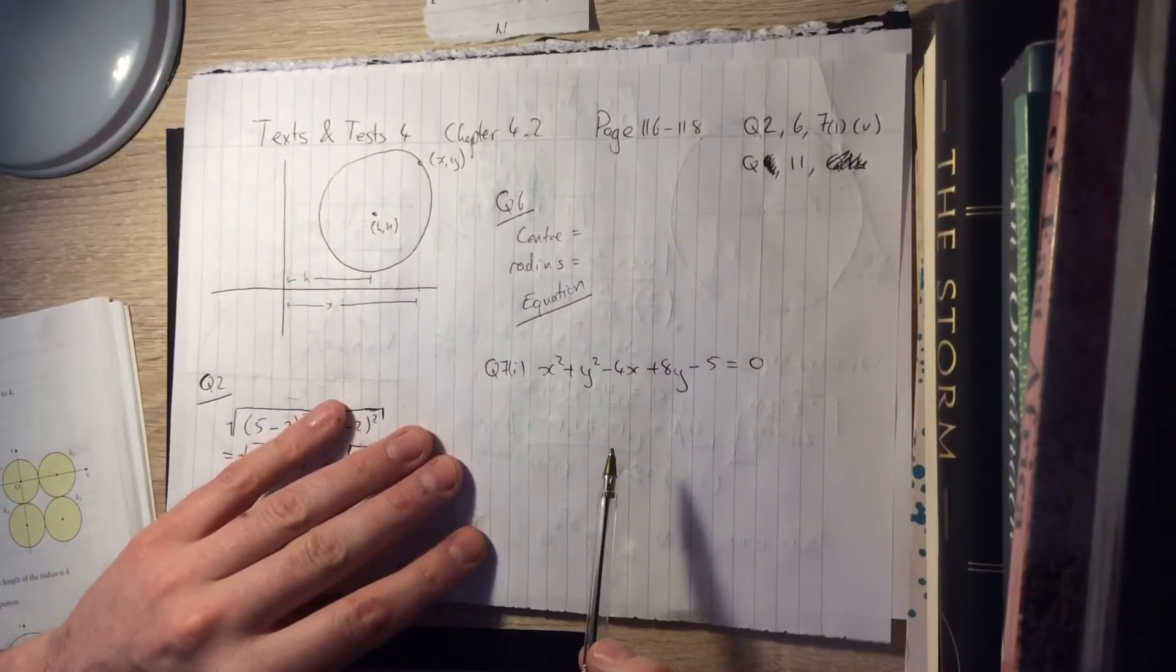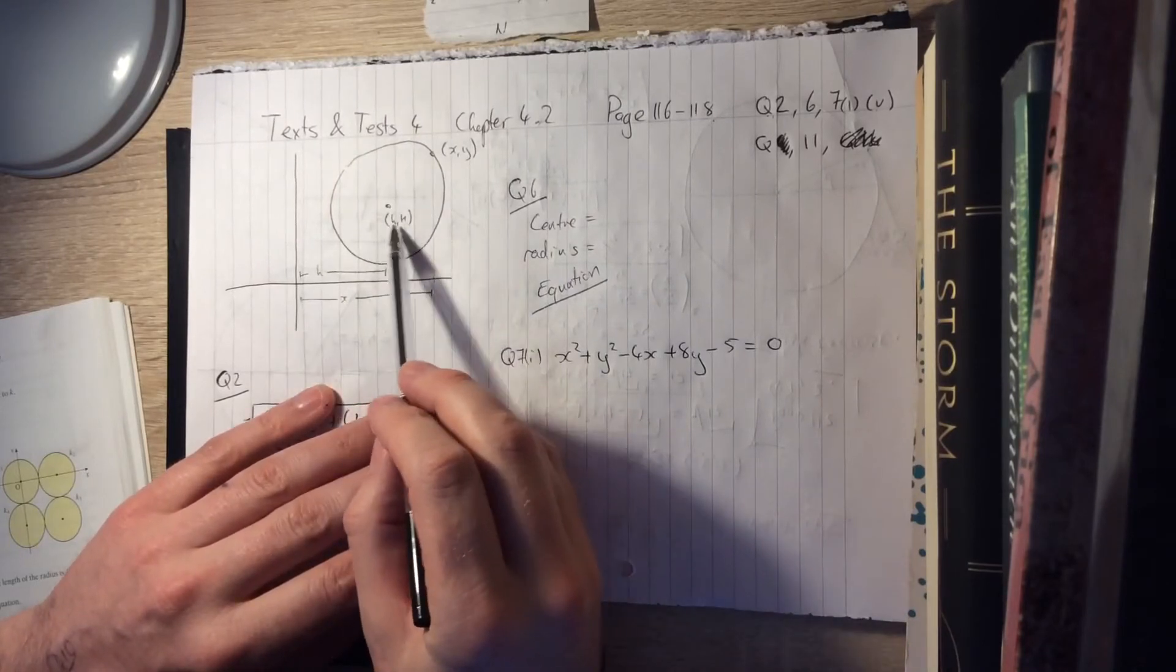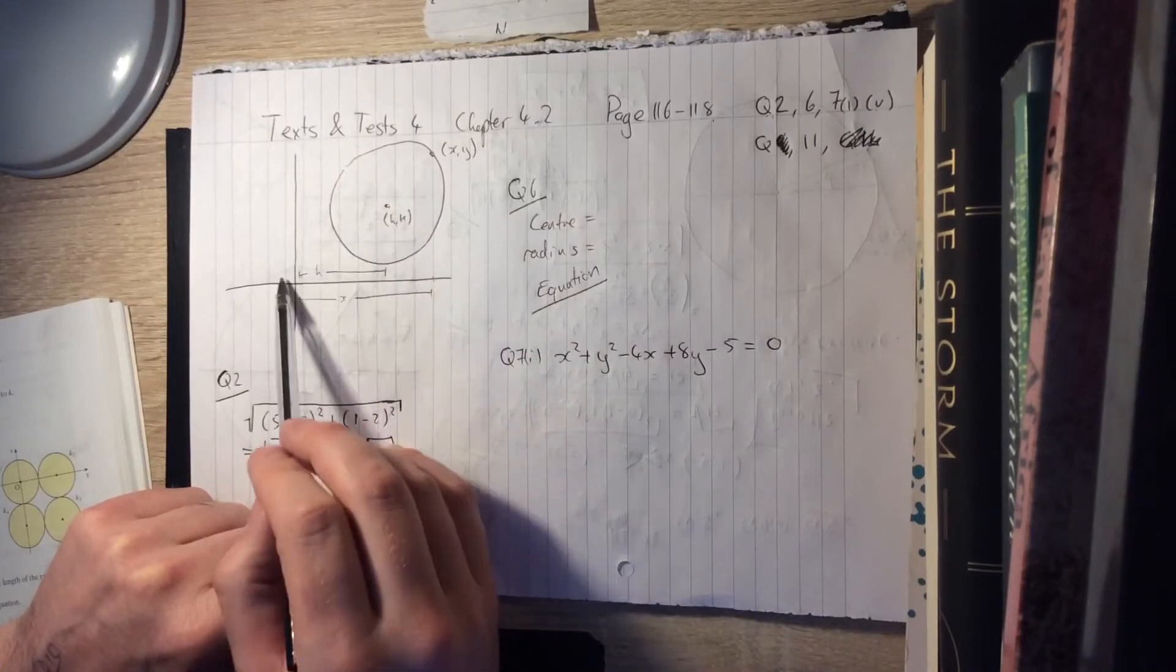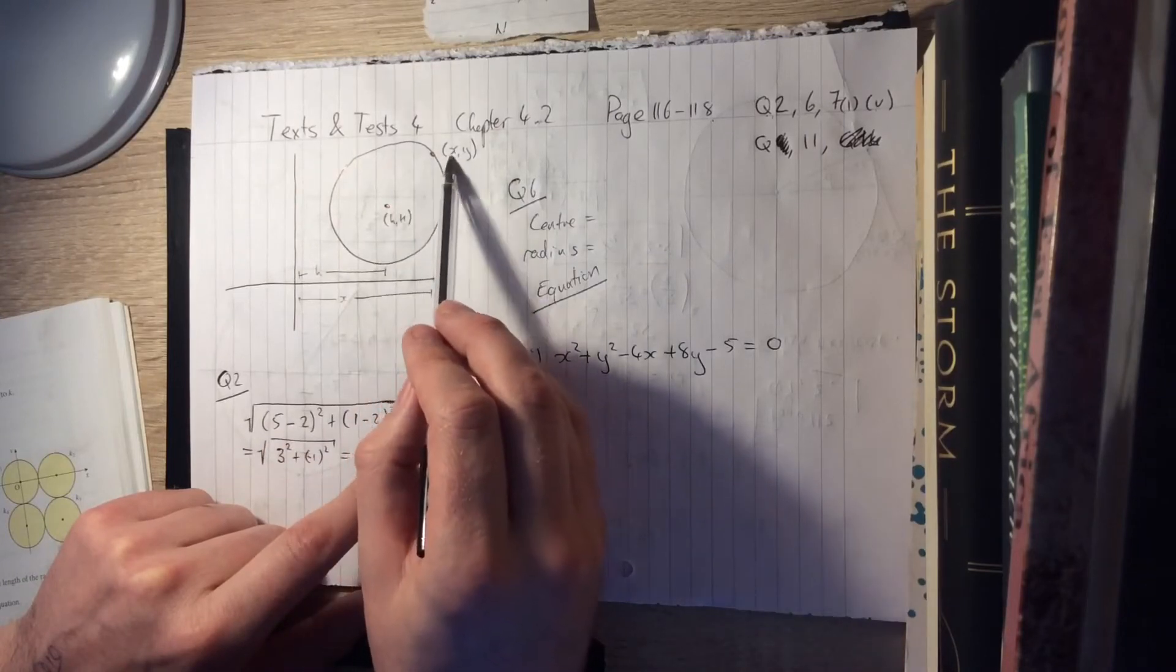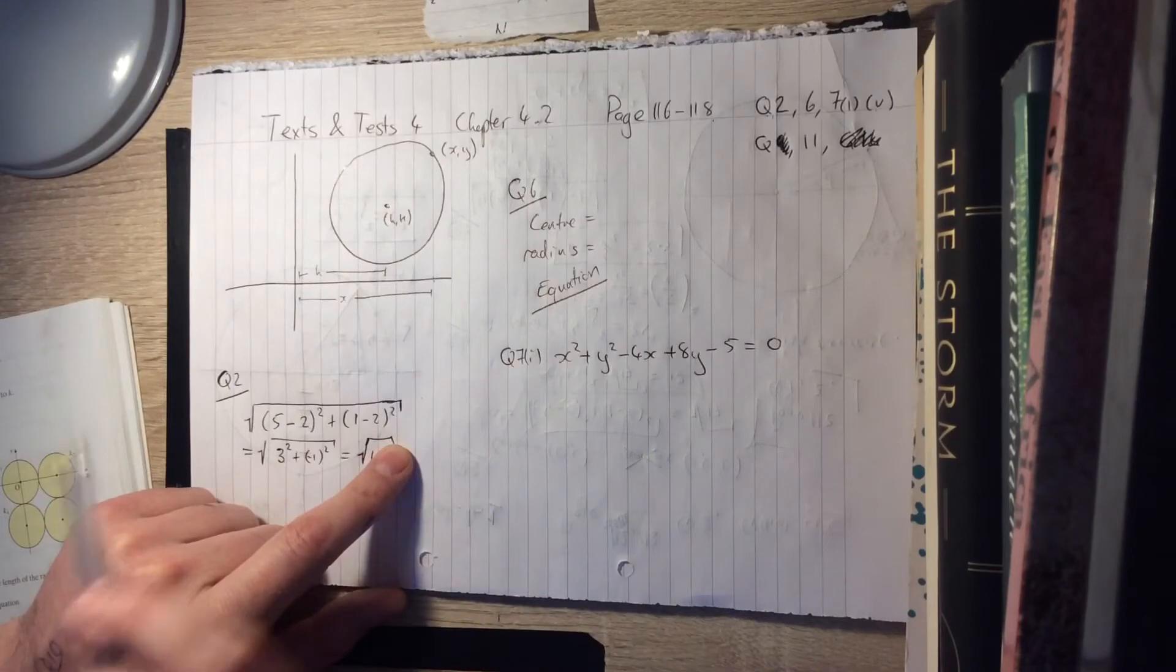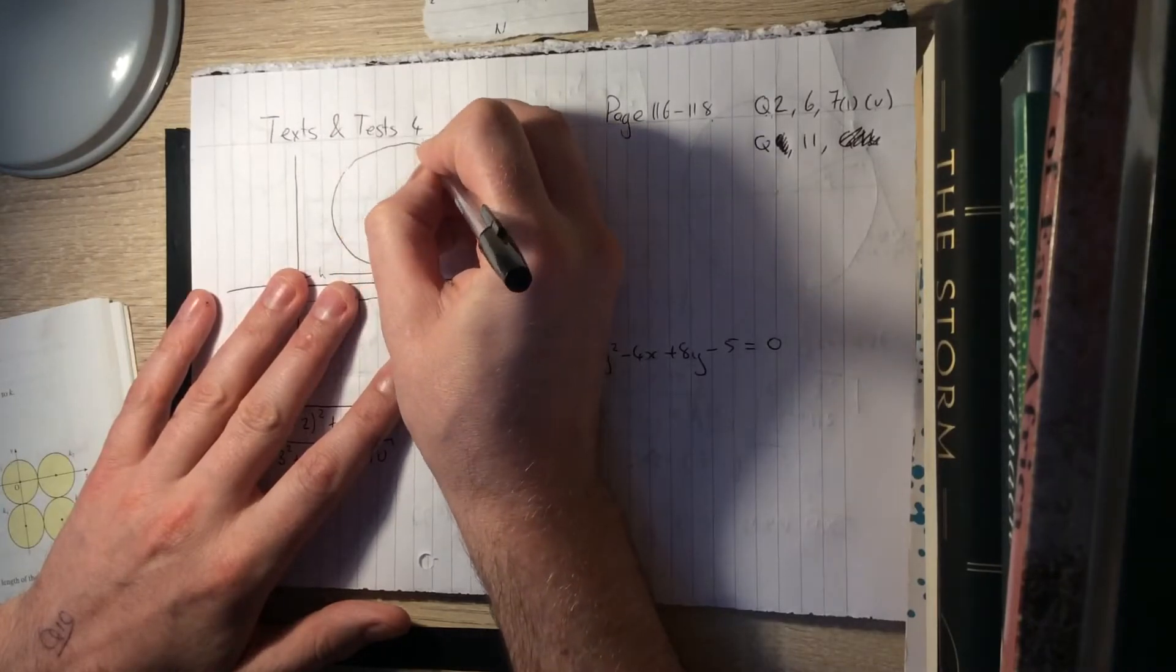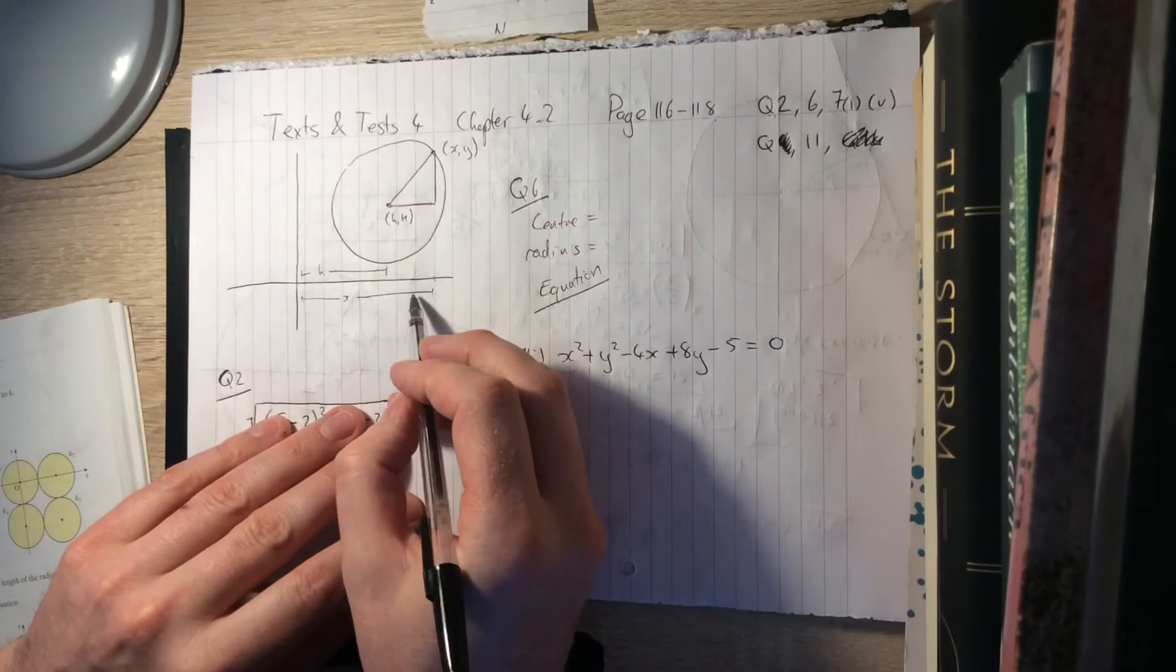And what we're looking at in this topic is a circle that doesn't have 0, 0 as a center. So instead it has some other point, h, k. And hopefully you'd be happy enough to say that the h coordinate of its center is a distance h across the x-axis. And this coordinate x, y, which is on the circle, is a distance x across the x-axis. So this line here, if we go back to drawing our right-angled triangle, this line here has length x minus h.